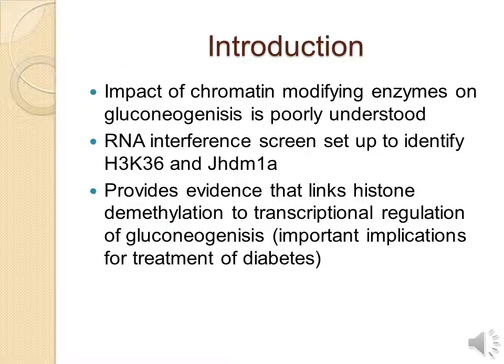Hepatic gluconeogenesis is required for maintaining glucose homeostasis in the blood, but to date the impact of chromatin modifying enzymes on gluconeogenesis is poorly understood. This report set out to gain some clarity on this matter. They knew that histone demethylases modulate chromatin structure and therefore gene expression by catalyzing the removal of methyl groups from specific lysine residues in histone tails. Using this knowledge they set up an RNA interference screen comparing the known histone demethylases and identified JHDM1A — a demethylase which acts on dimethylated H3 lysine 36 — as a key negative regulator of gluconeogenesis.